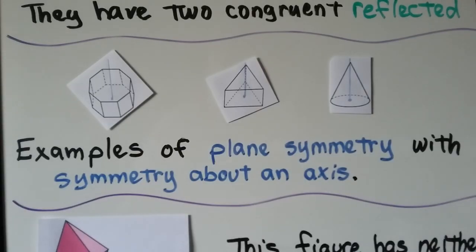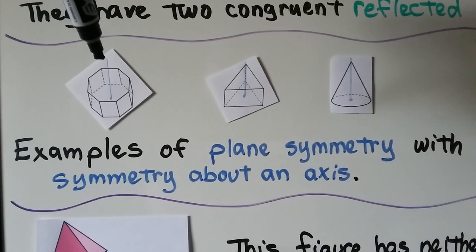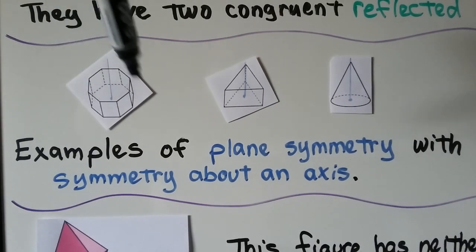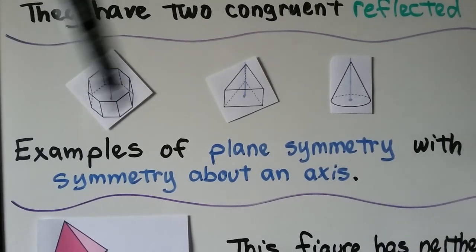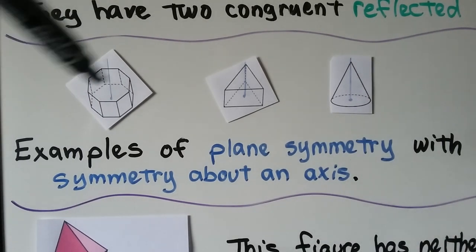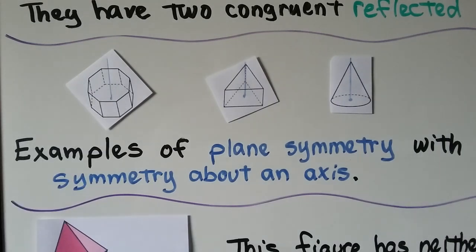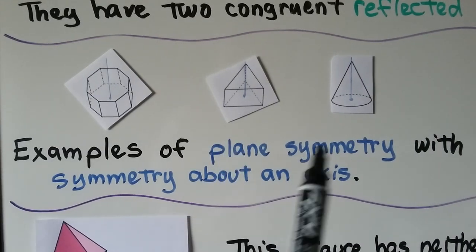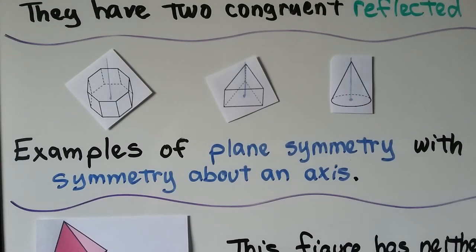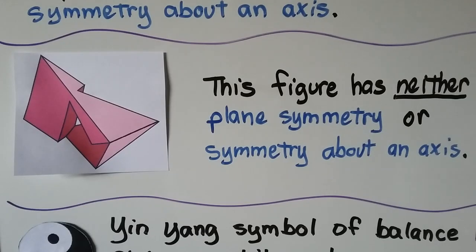Here are some examples of plane symmetry with symmetry about an axis. If we had this polygon and put a string down here and it rotated around, it would have plane symmetry and could spin around about the axis and be symmetrical. We could do it with this triangular prism, we could do it with this cone. This figure has neither plane symmetry nor symmetry about an axis — it's just too weirdly shaped.